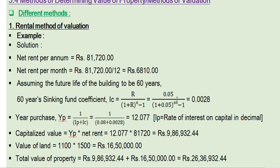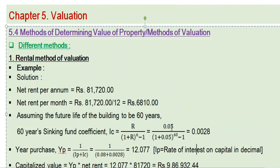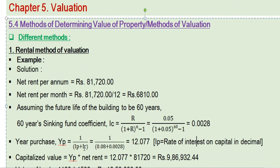Using r = 0.05, the sinking fund coefficient equals 0.05 divided by [(1 + 0.05)^60 − 1], which gives ic = 0.0028. Therefore, years purchase YP = 1 divided by (ip + ic).